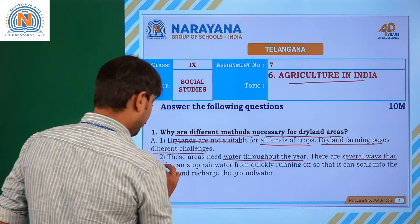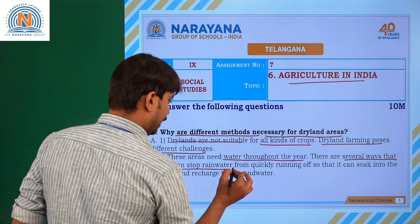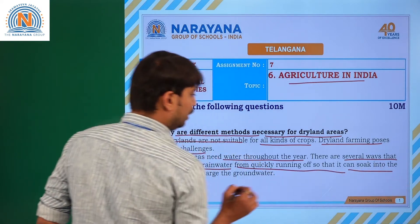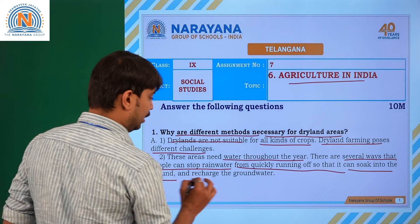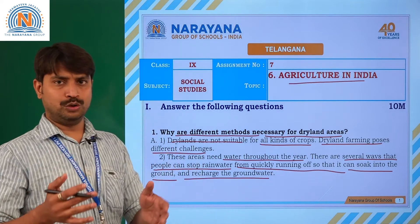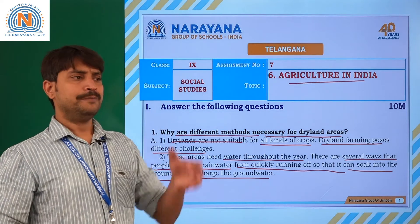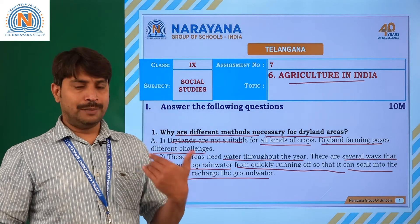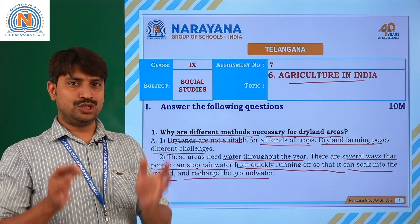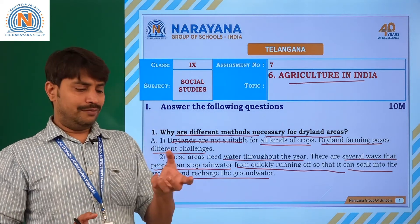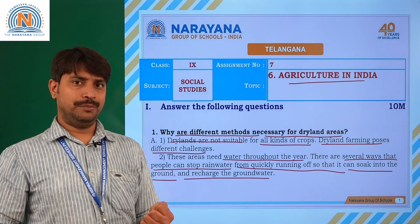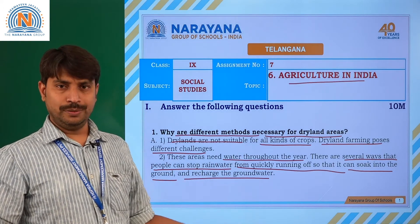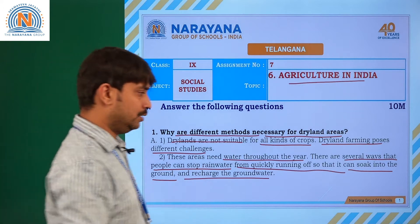There are several ways that people can stop rain water from quickly running off so that it can soak into the ground and recharge the ground water. By placing percolation pits or forming trenches, they can store rain water, allowing absorption of water and recharging of ground water to be increased.